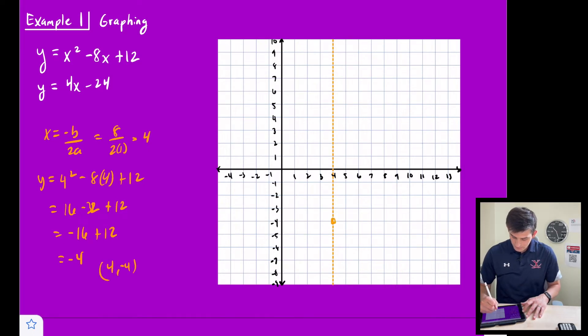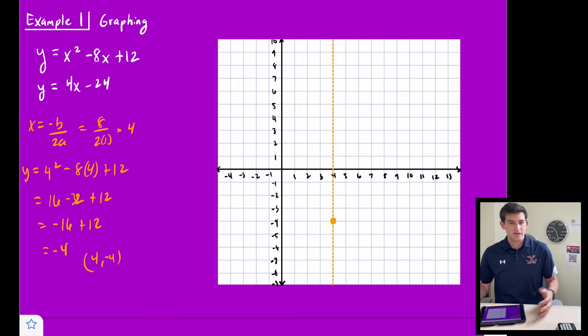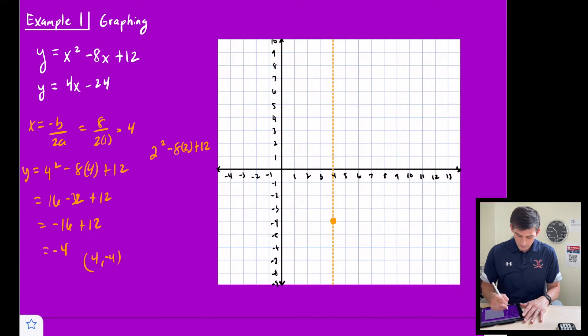And we can plot that, (4, -4). Let's just plug in another x value to plot another point on our parabola, and then we can reflect it over the axis of symmetry. So I'm going to plug in when x is 2. So let's say we have 2² - 8(2) + 12. So 4 - 16 + 12.